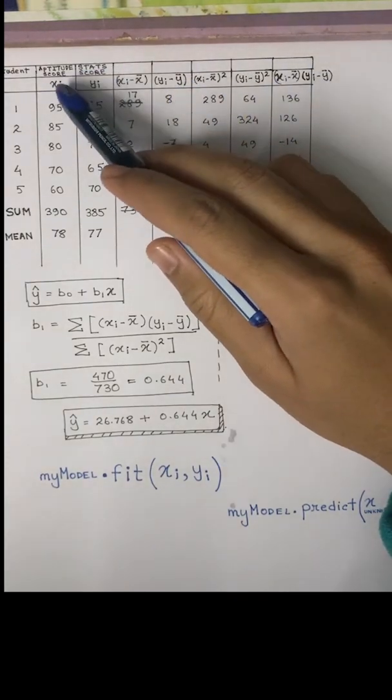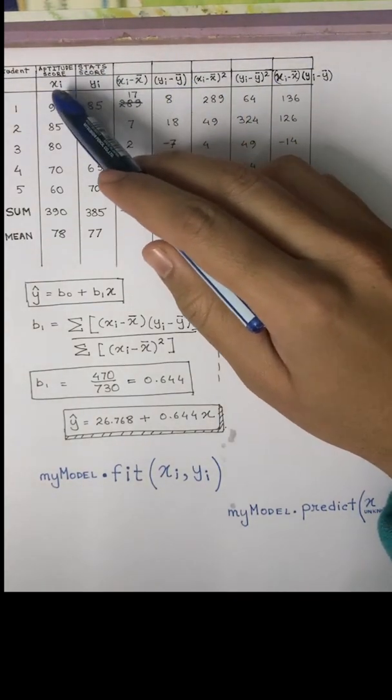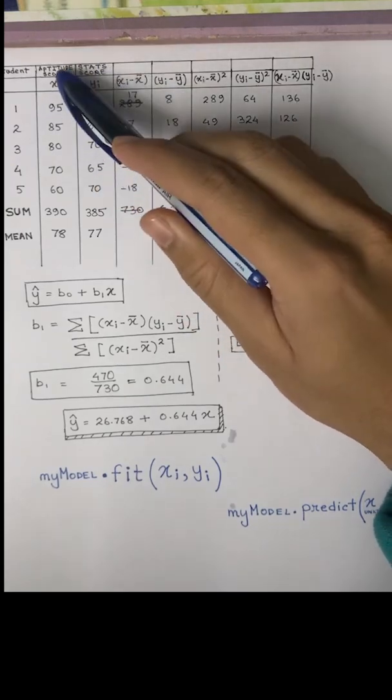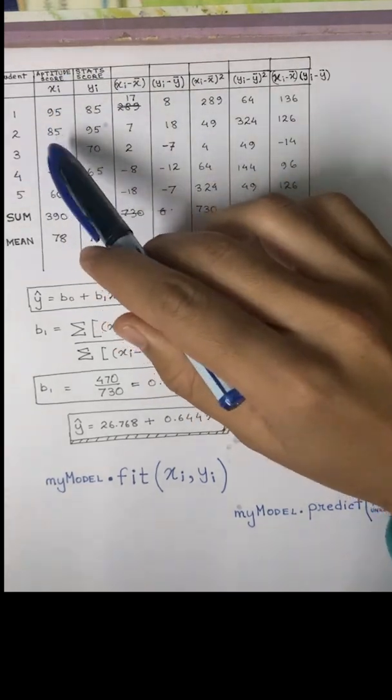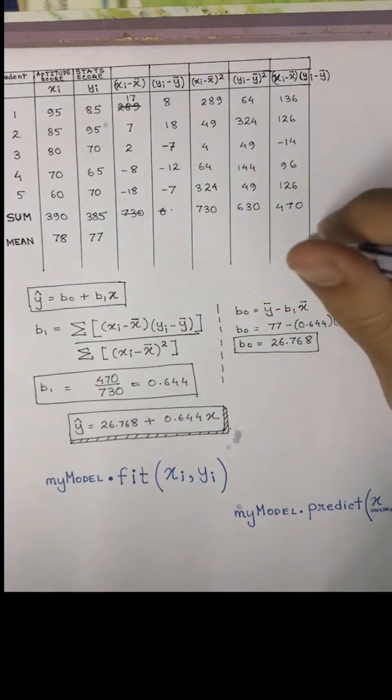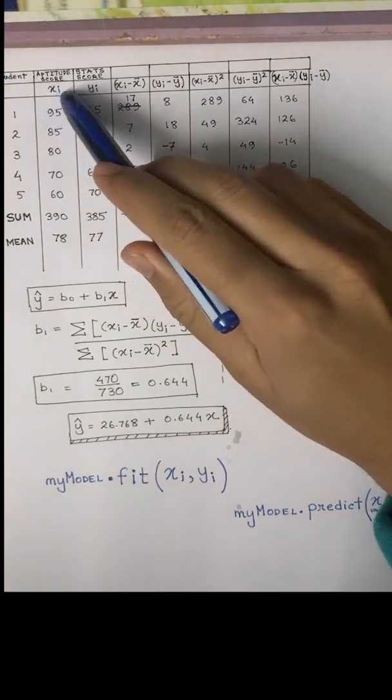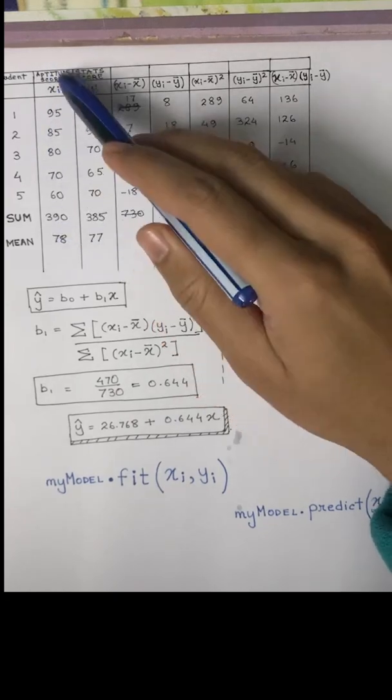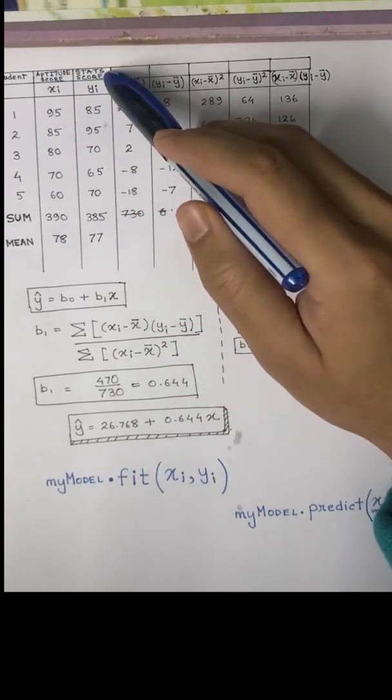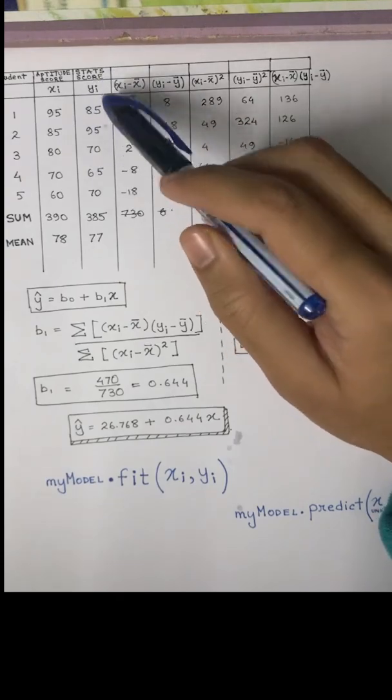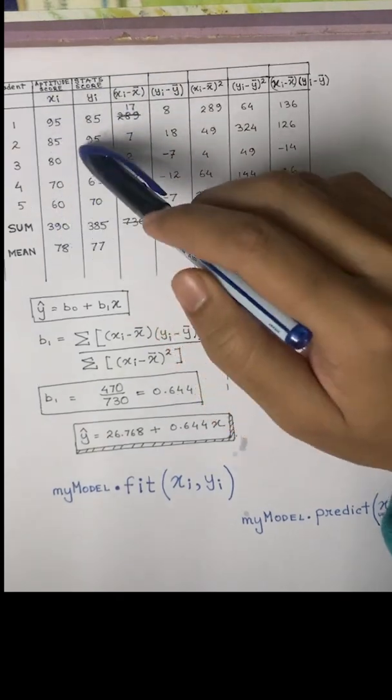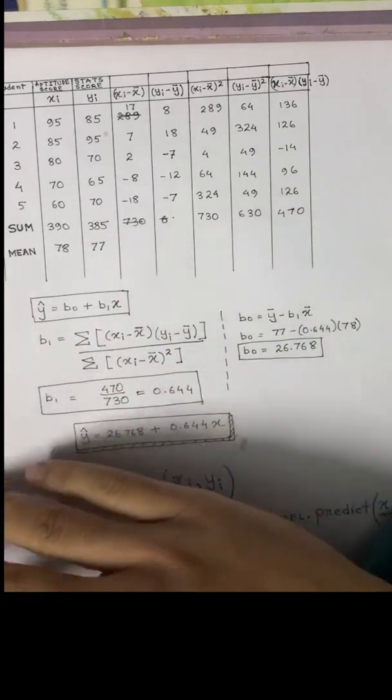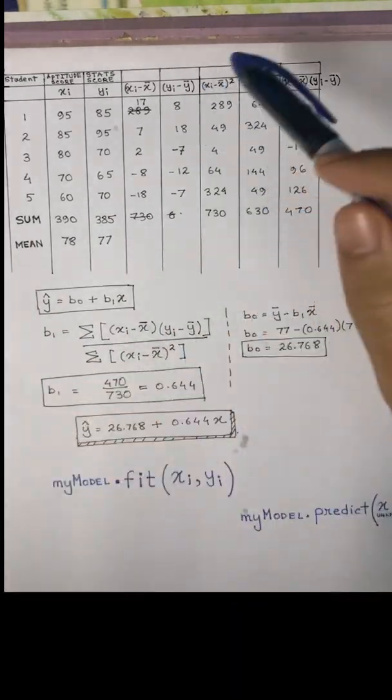We want to see if there is any relation between the statistics course and the aptitude scores of the various students. This is xi, which is the input - in this case it's only one aptitude score, the only independent variable. Stat score is the dependent variable, so we will check if there is any relation of y with x or not.